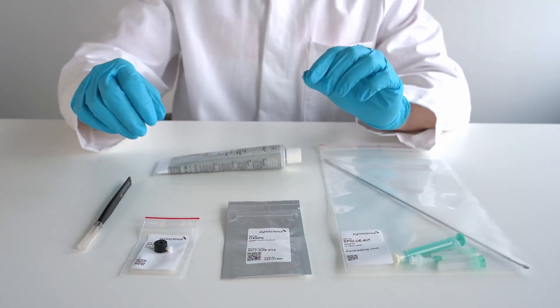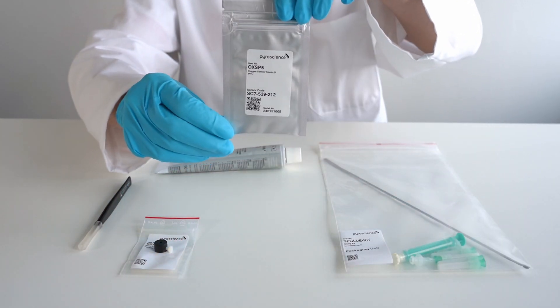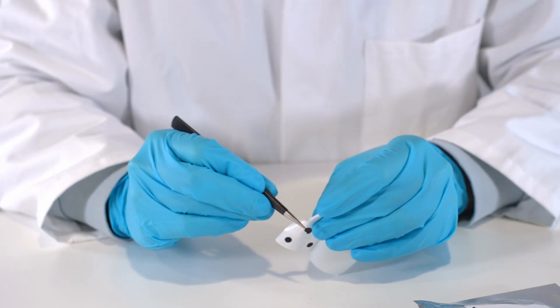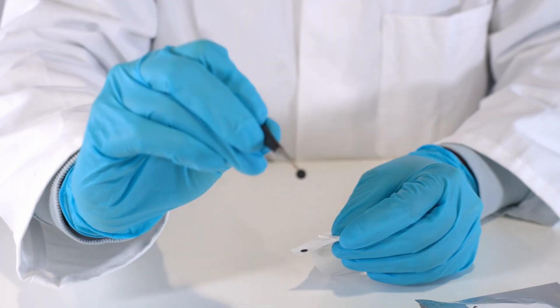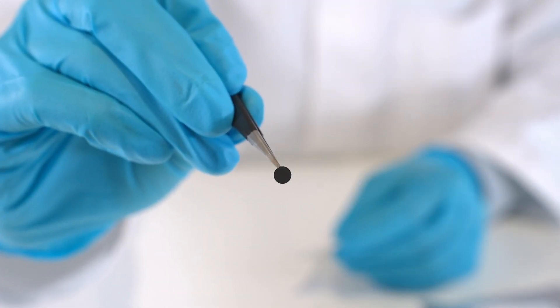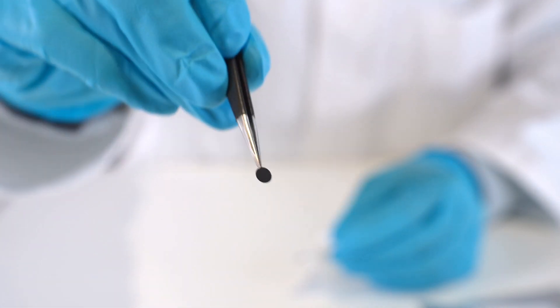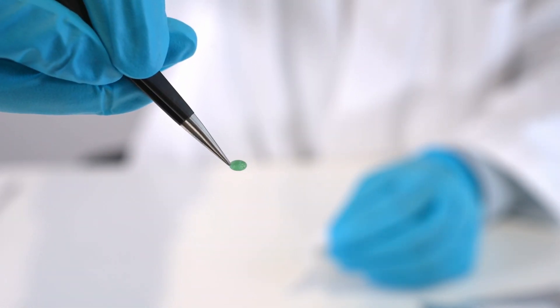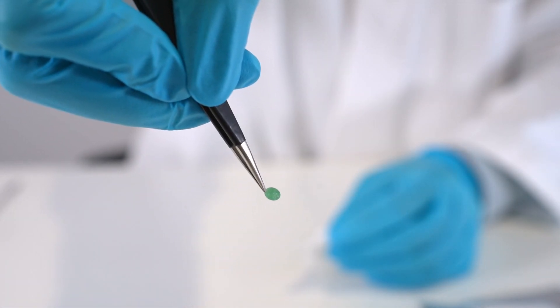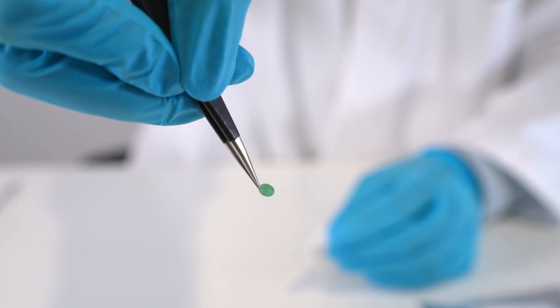In our example we are using the oxygen sensor spot oxsp5. The sensor spots have an optical isolation on the sensing surface which has to be placed in direct contact with the gas or aqueous sample. The backside of the sensor spots is green with a smooth surface which has to be glued onto the inner wall of the sample container.